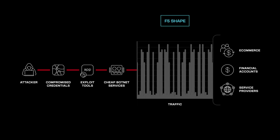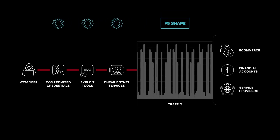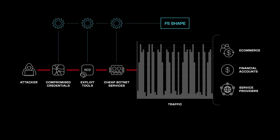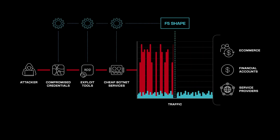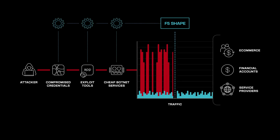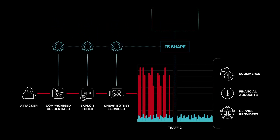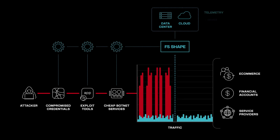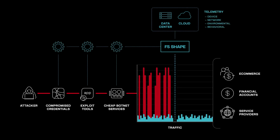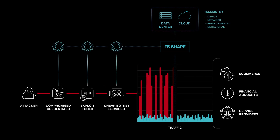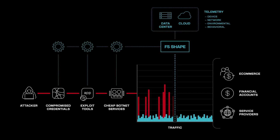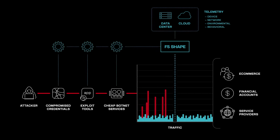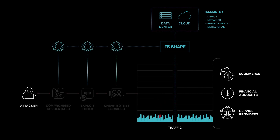The Shape solution is making sure that attackers get no return on their investment, especially when they're targeting one of our customers. The Shape platform works by collecting and analyzing telemetry signals and learning normal and malicious patterns for organizations of similar attack profiles, risk surfaces, and industry verticals, with the assumption that motivated cyber criminals will try to circumvent all security countermeasures. By making things difficult, we encourage them to abandon their attacks and find an easier target.